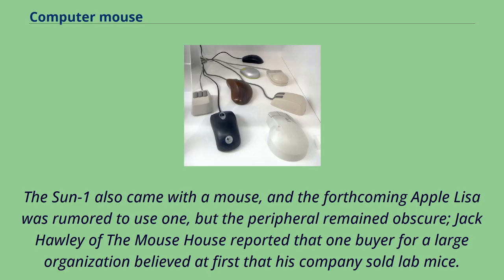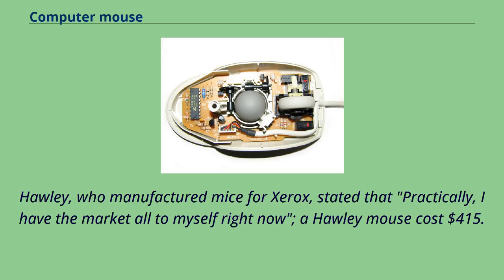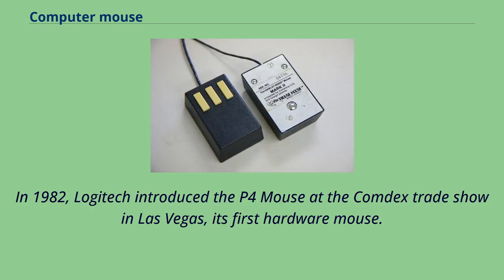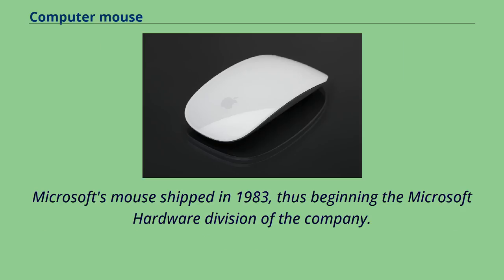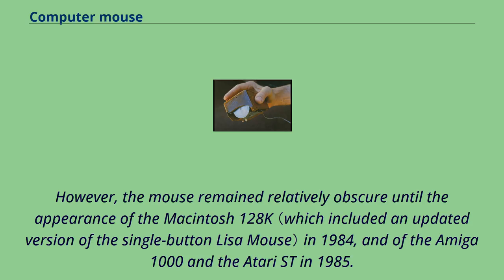Jack Hawley of the Mouse House reported that one buyer believed his company sold lab mice, and stated he had the market all to himself — a Hawley mouse cost $415. In 1982, Logitech introduced the P4 mouse at the Comdex trade show, its first hardware mouse. That same year Microsoft made MS-DOS program Microsoft Word mouse-compatible and developed the first PC-compatible mouse. Microsoft's mouse shipped in 1983, beginning the Microsoft hardware division. However, the mouse remained relatively obscure until the appearance of the Macintosh 128K in 1984, and of the Amiga 1000 and Atari ST in 1985.